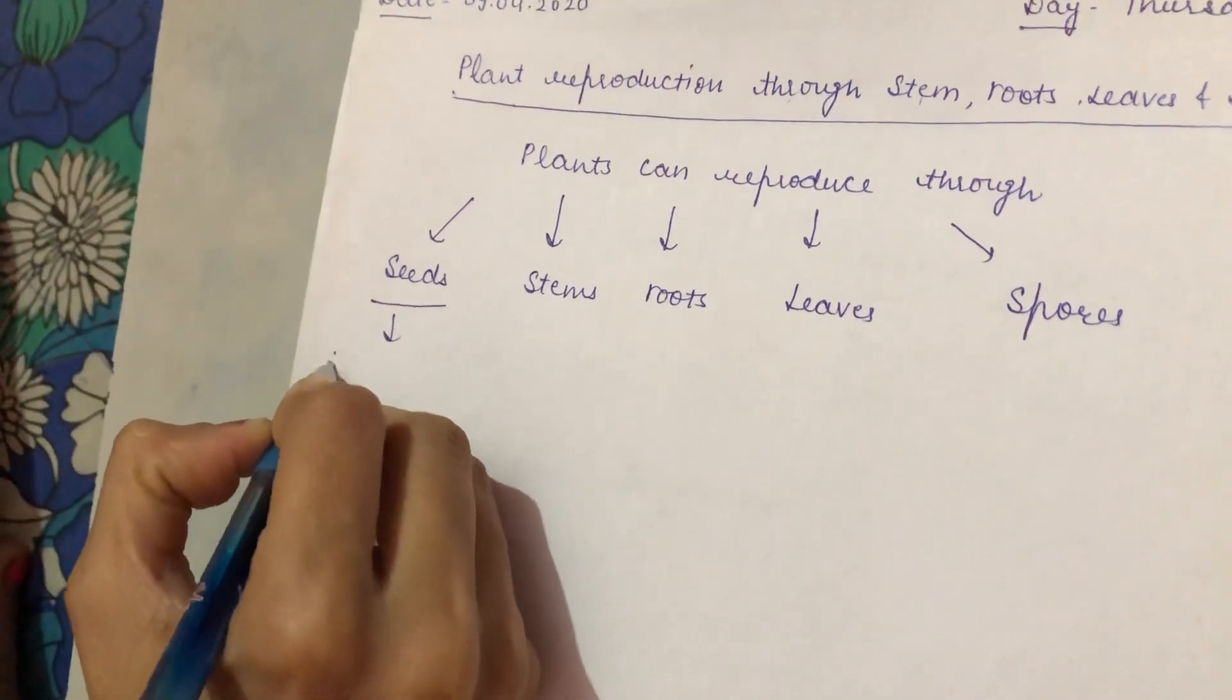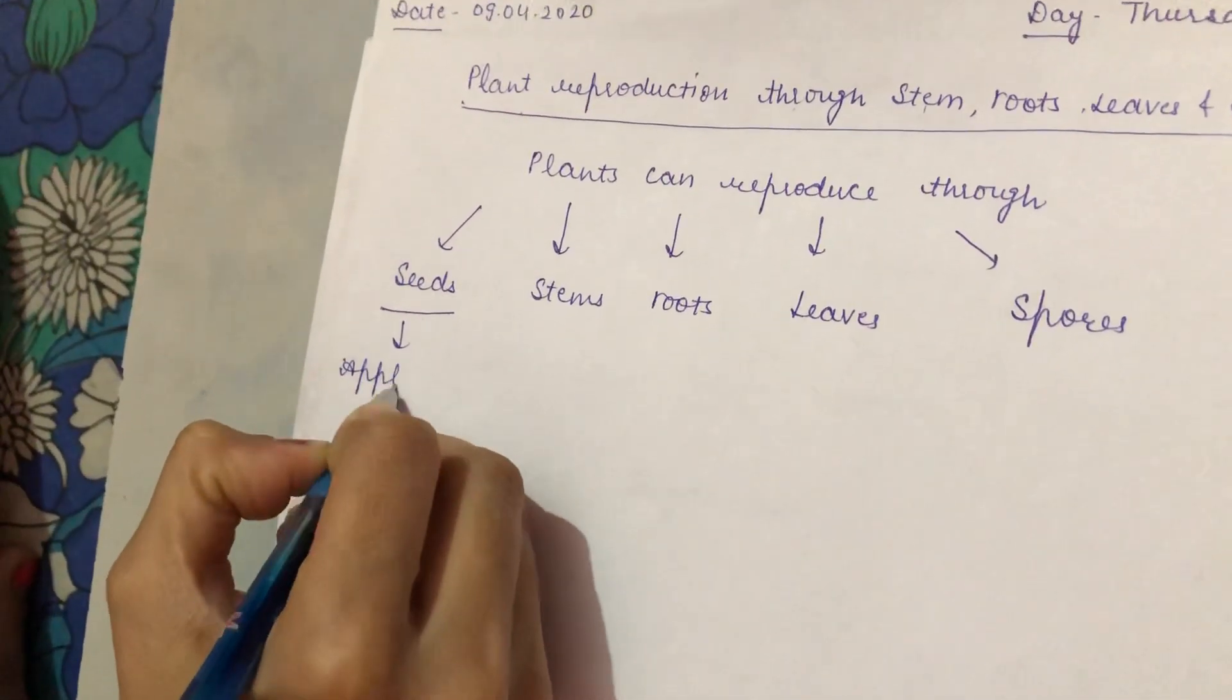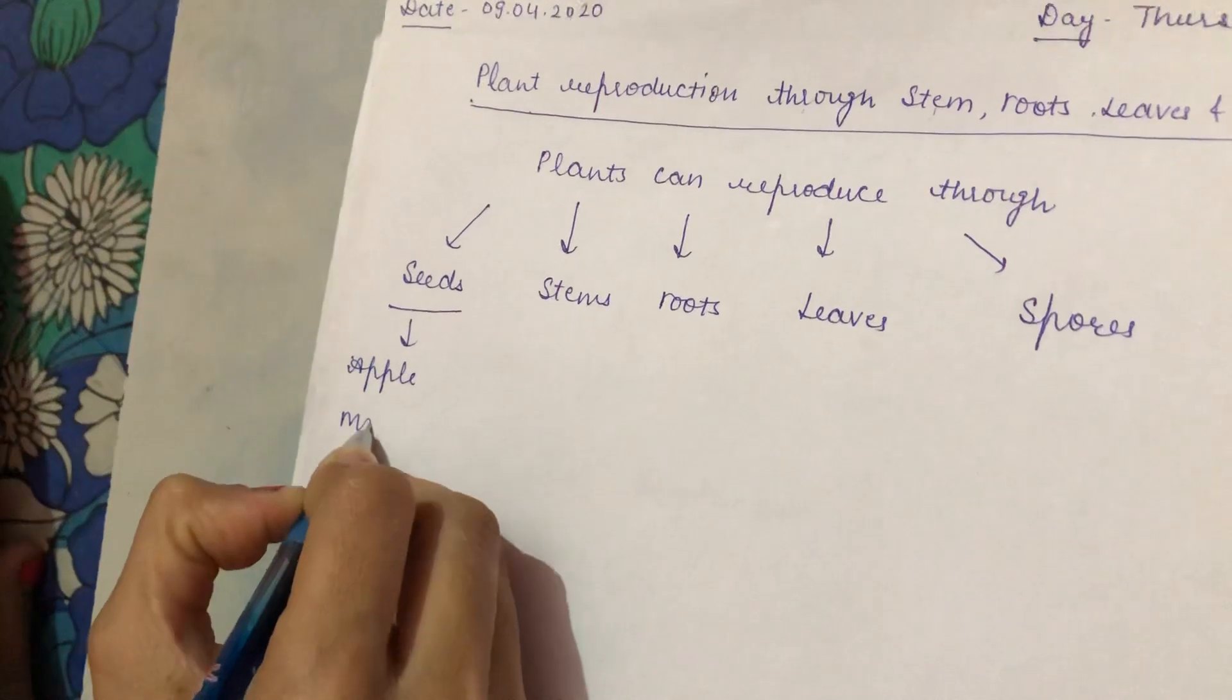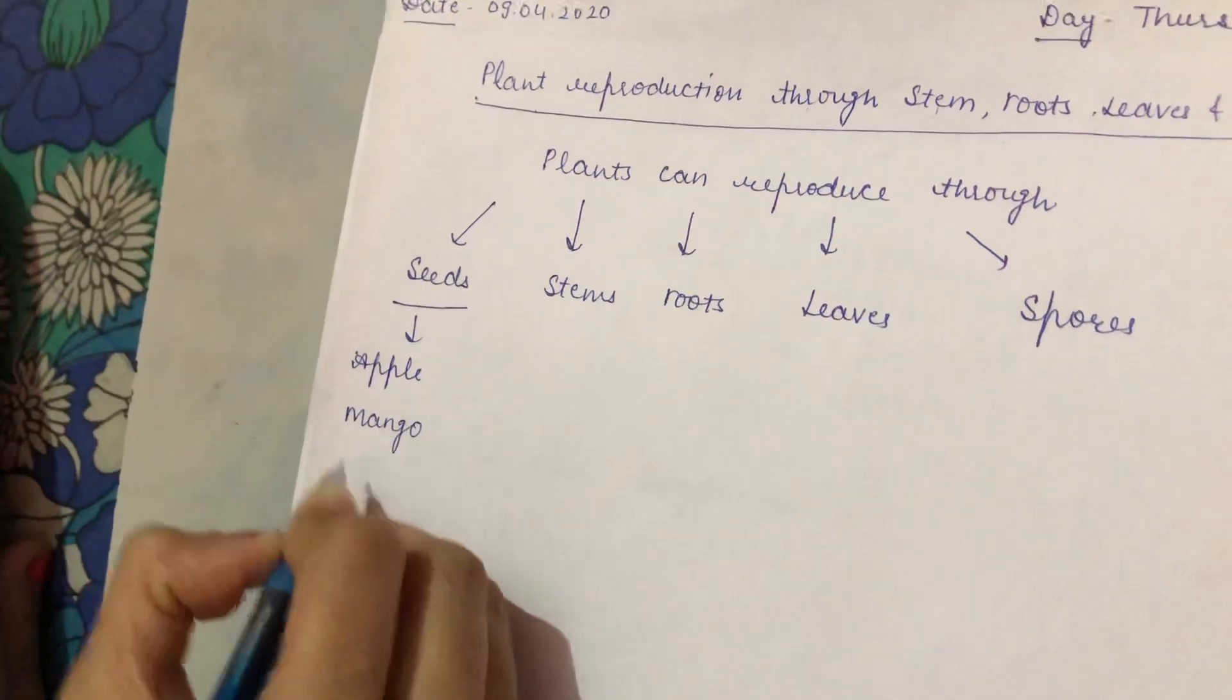There are some plants like apple, mango, chili. These can be grown using seeds.